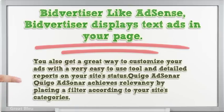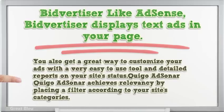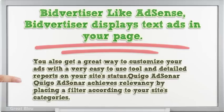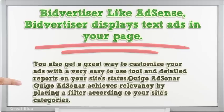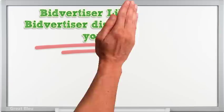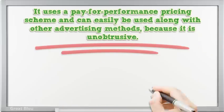You also get a great way to customize your ads with a very easy-to-use tool and detailed reports on your site's status. QuigoAdSonar achieves relevancy by placing a filter according to your site's categories. It uses a pay-for-performance pricing scheme and can easily be used along with other advertising methods.